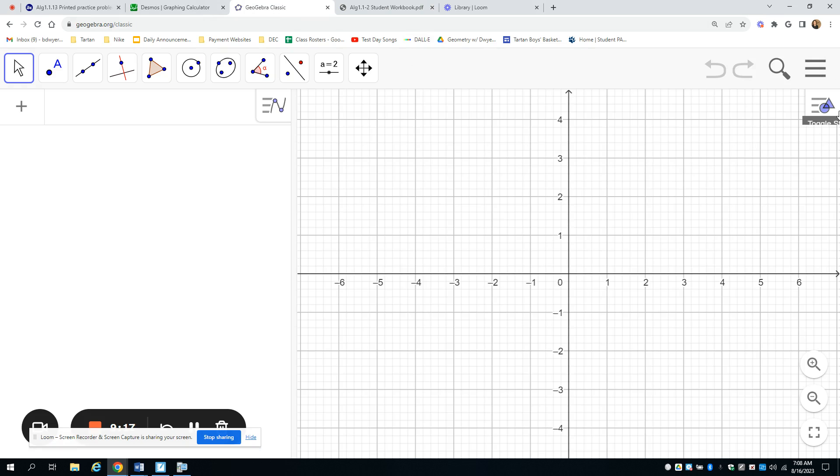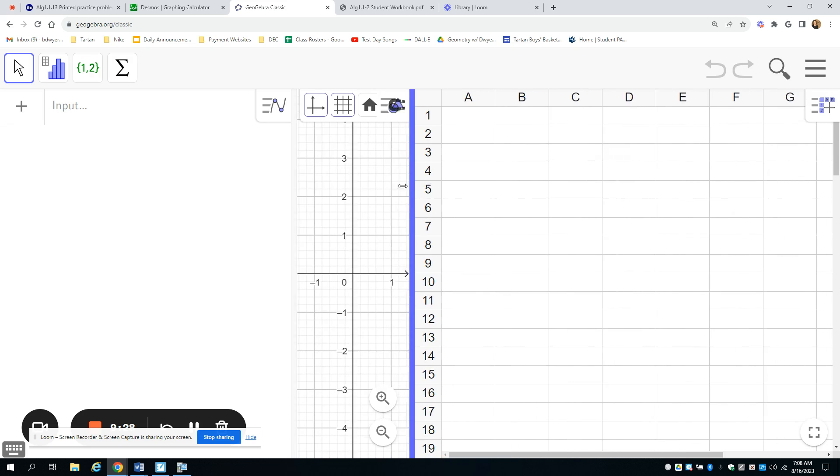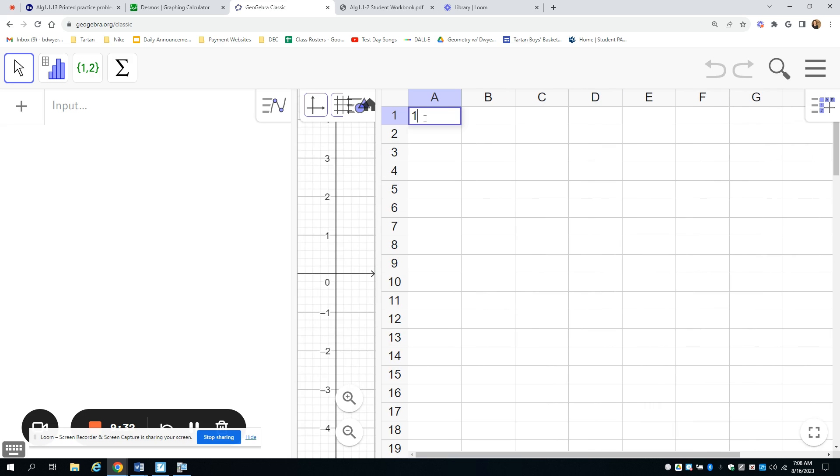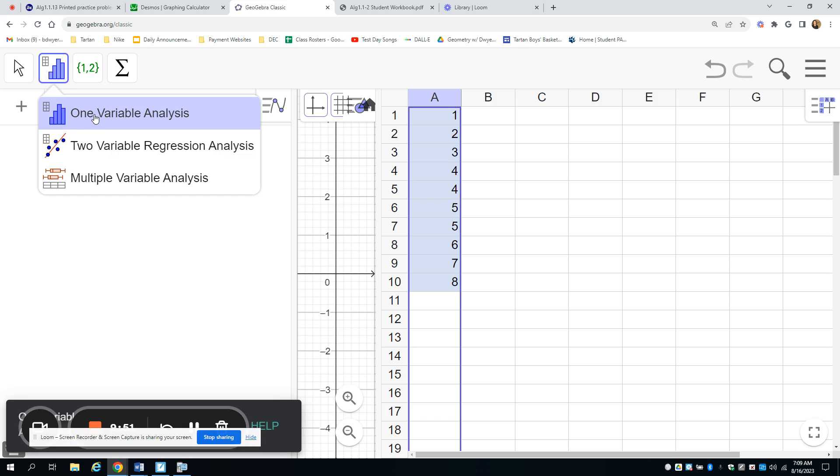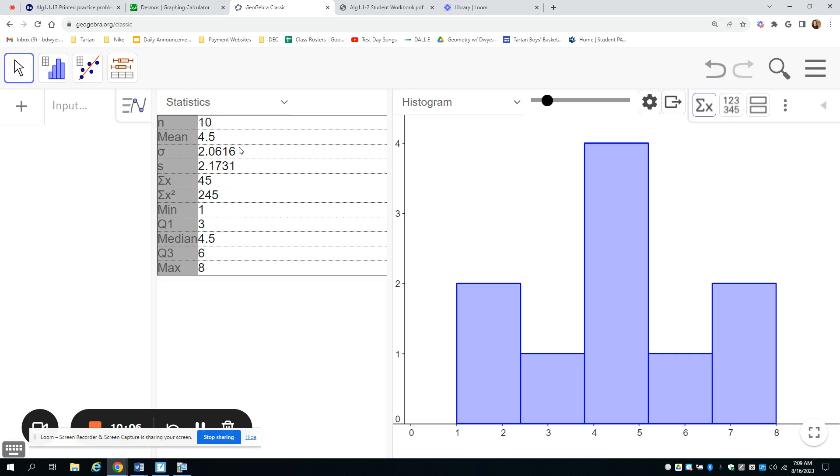So for GeoGebra, you click this button in the upper right-hand corner with the triangle and the circle. Then you click the three little dots and go to spreadsheet so that you can type in your data here. So the data for this was 1, 2, 3, 4, 4, 5, 5, 6, 7, 8. And we highlight that data and we click this kind of bar graph looking thing over here and click one variable analysis. Now this is going to give you a histogram. But if you click this little button here that looks like a big EX, it's really the Greek letter sigma, then it'll give you your statistics here and you can find your standard deviation by the lowercase sigma, this 2.06.